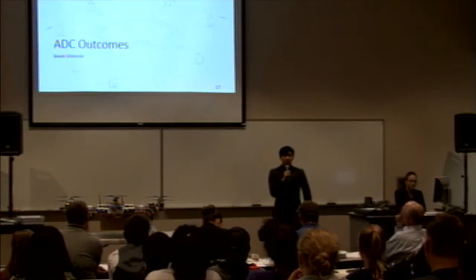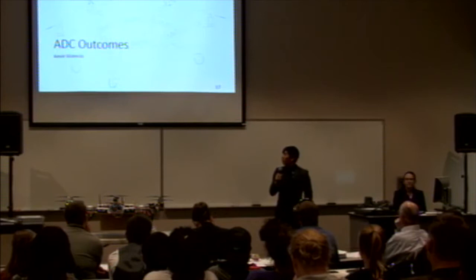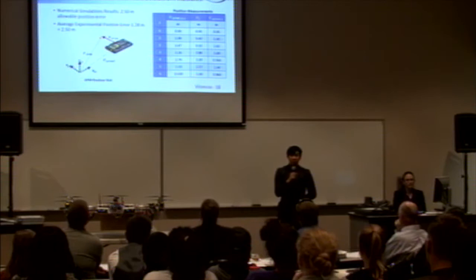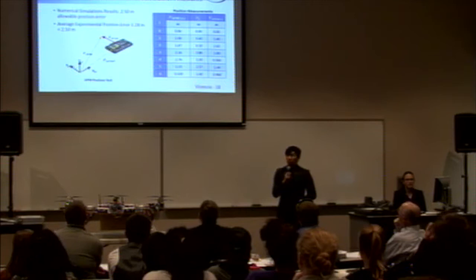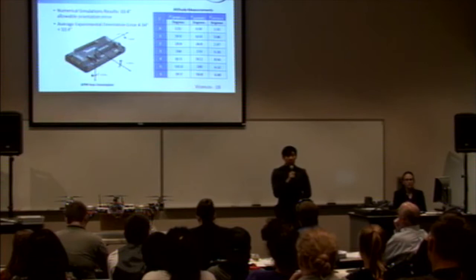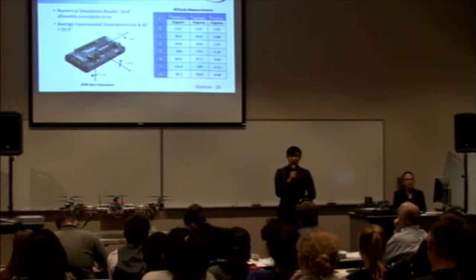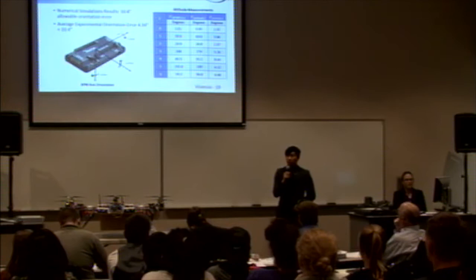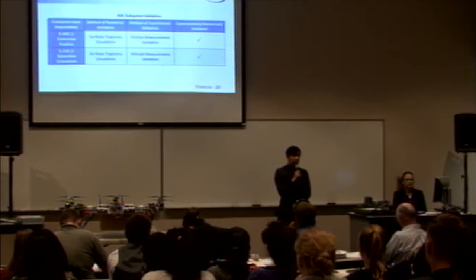Thank you, Megan. My name is Kevin Vicencio, and I will be discussing the results for the ADC subsystem testing. For the position measurement validation, from our numerical simulations, it was determined that the allowable position error was 2.5 meters. As shown in the table, the average experimental position error was 1.28 meters, which is less than our 2.5 meter tolerance. The average experimental orientation error was 4.34 degrees, which is less than our 10.4 degree requirement. From these tests, it was confirmed that the previously mentioned subsystem requirements were validated.